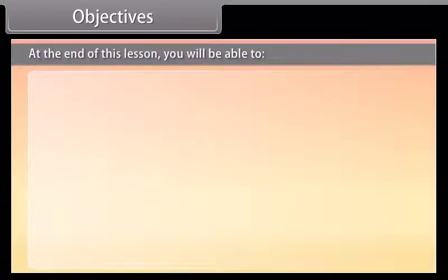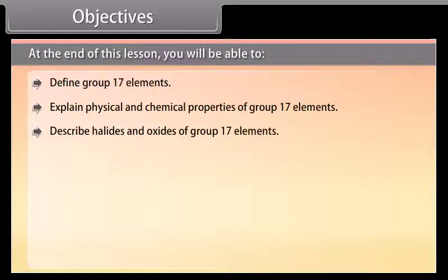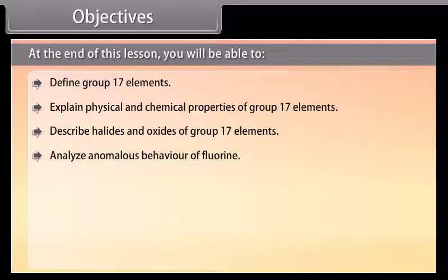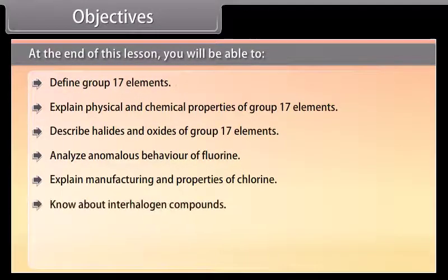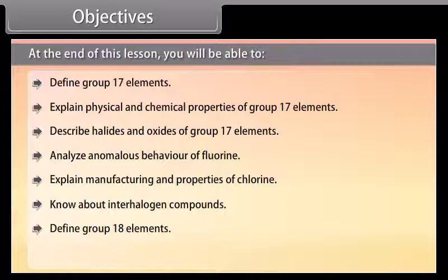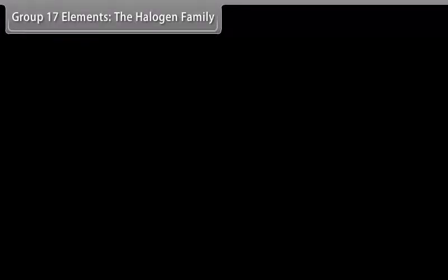Objectives: At the end of this lesson, you will be able to define group 17 elements, explain physical and chemical properties of group 17 elements, describe halides and oxides of group 17 elements, analyze anomalous behavior of fluorine, explain manufacturing and properties of chlorine, know about interhalogen compounds, define group 18 elements, and explain physical and chemical properties of group 18 elements.